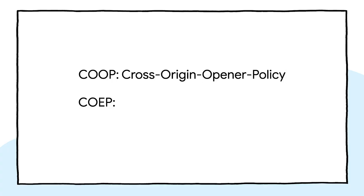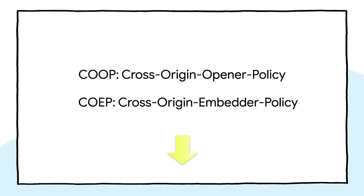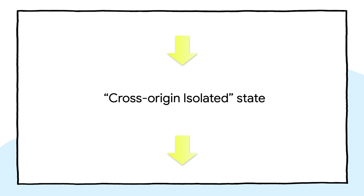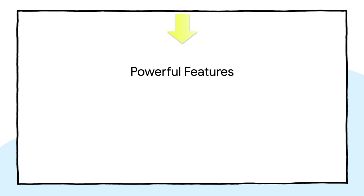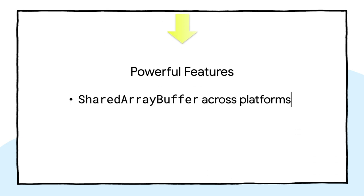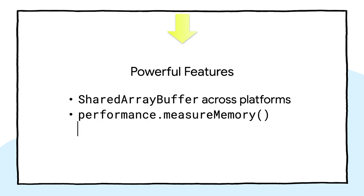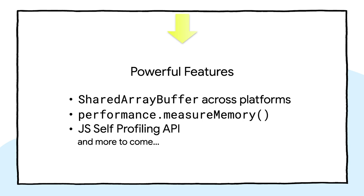Hi everyone, I'm Eiji, and today I'm going to talk about COOP and COEP. COOP and COEP are names of HTTP headers that let your webpage opt into a special state called cross-origin-isolated and gain access to powerful features such as shared array buffers across platforms, performance.measureMemory, and the JS self-profiling API. If you are interested in using a powerful feature from this growing list, you will need to opt into COOP and COEP.